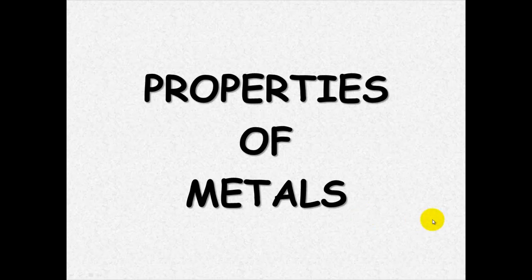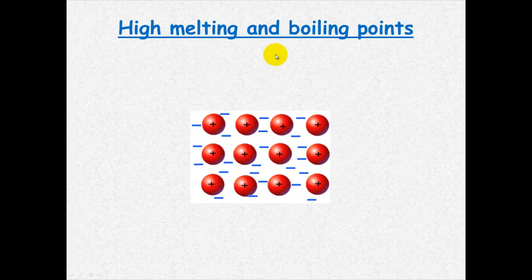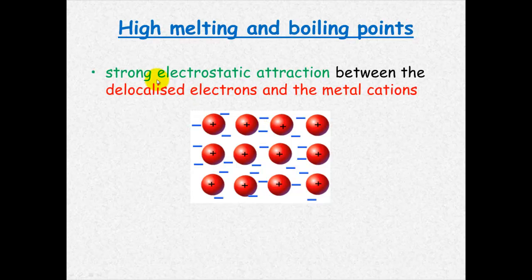So we know about the structure, how does that structure give it the properties that metals have? Let's look at the high melting and boiling point. Here we have our positive cations and our sea of delocalized electrons. There is a very strong electrostatic attraction between positive and negative. So we've got strong electrostatic attraction between the delocalized electrons and the metal cations, and what this creates is almost like glue. These cations are attracted to the electrons in between which those electrons are attracted to the cation, so it's a strong electrostatic attraction and this means that metallic bond is a very strong bond.